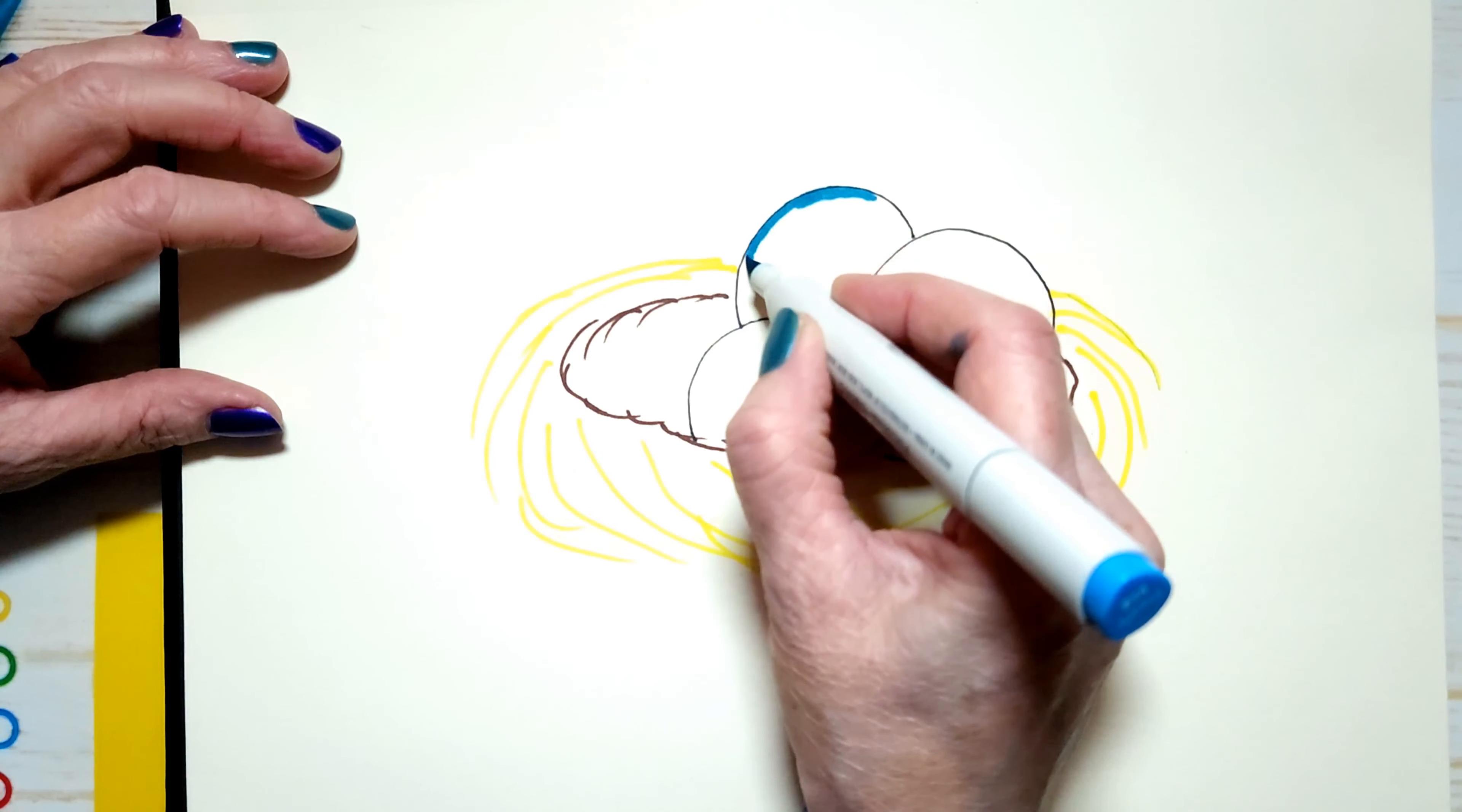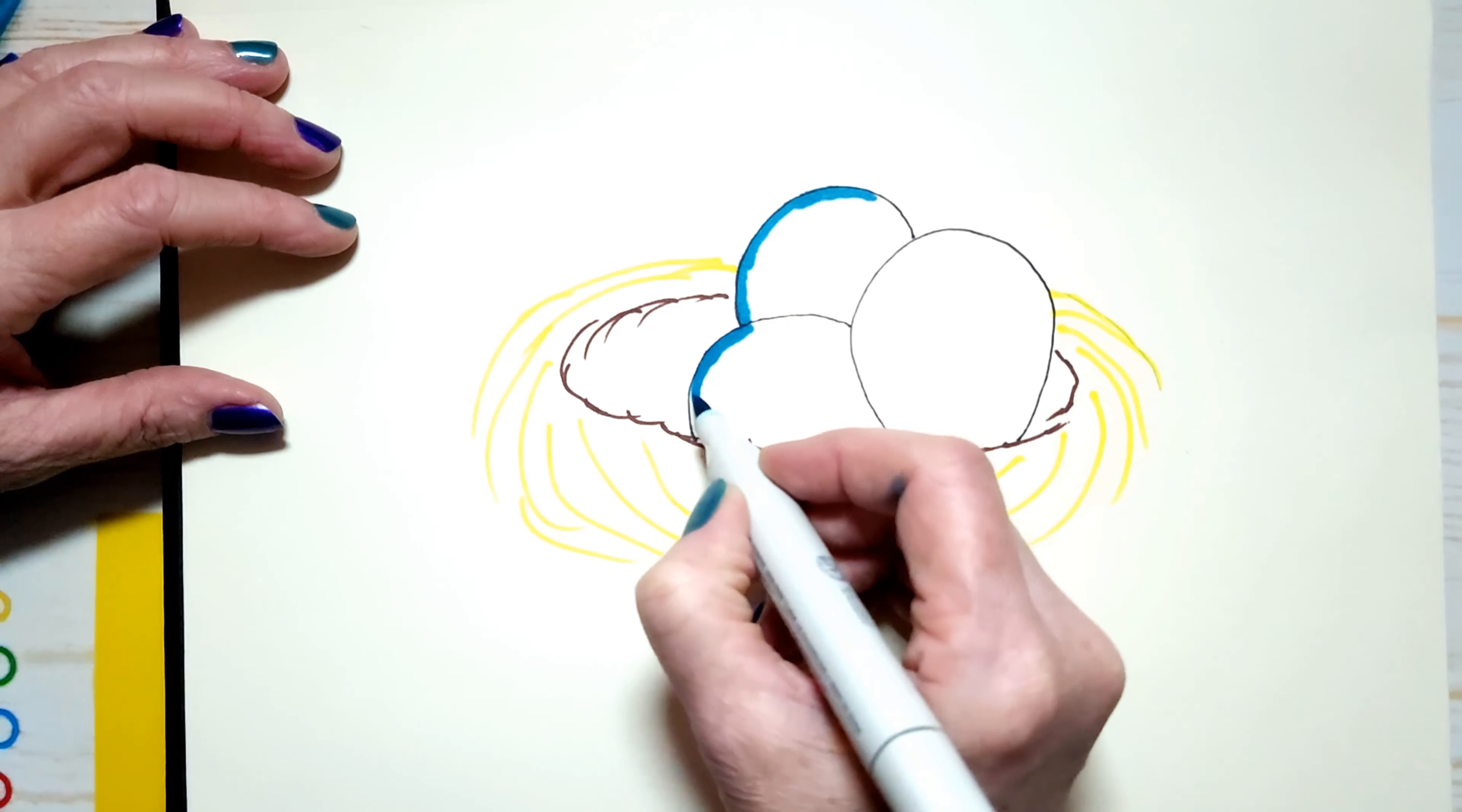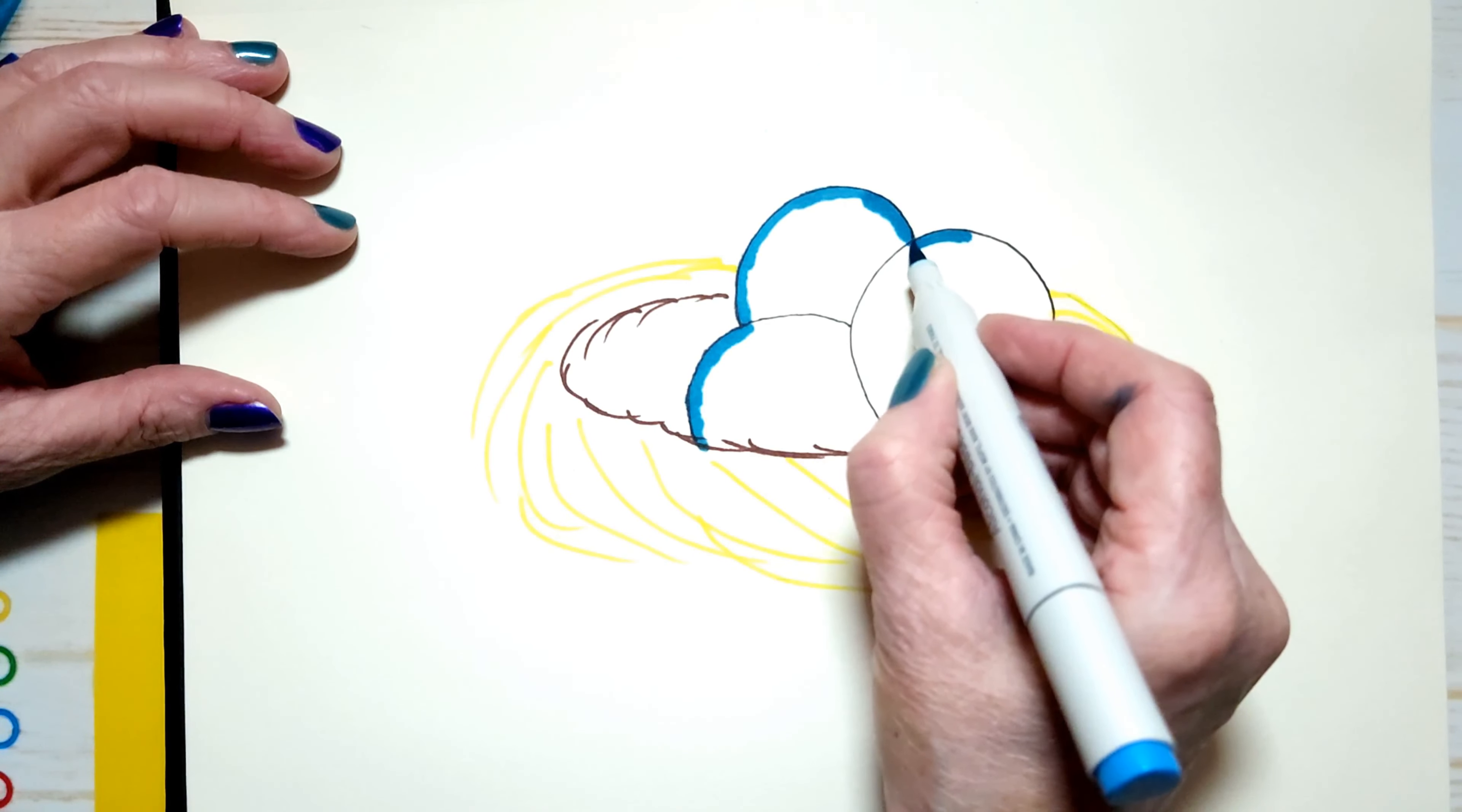And I am trying not to get any blue into the nest and outside of my lines. So I'm going to take my time doing this. And this is how I do it. I always outline kind of the area first. And then I go in and put the color in everywhere else.